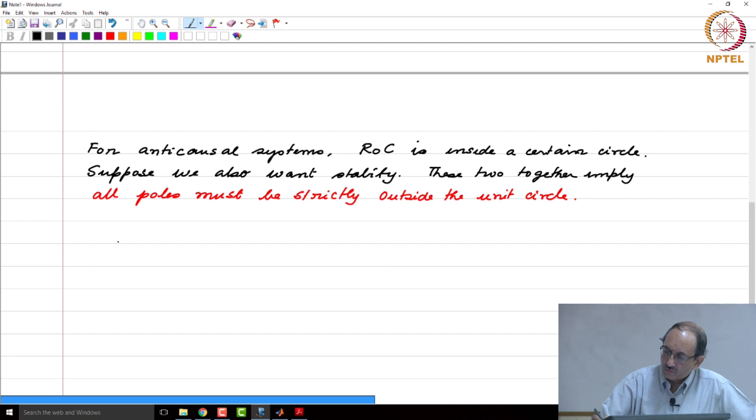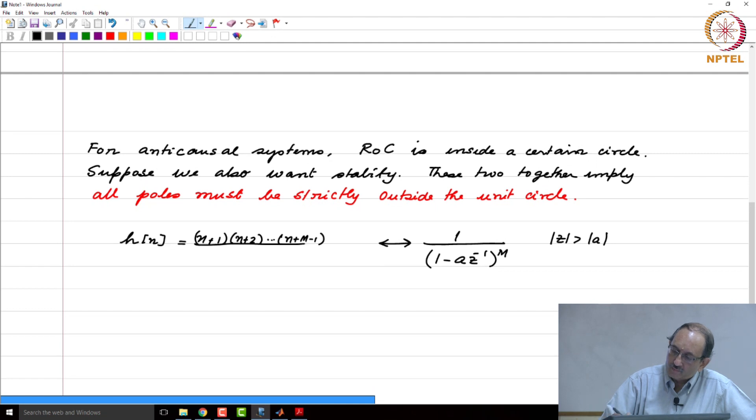In terms of discrete time systems, suppose you had 1 minus a z inverse to the m mod z greater than mod a. Then if you recall, this is nothing but n plus 1 times n plus 2 up to n plus m minus 1 by m minus 1 factorial times a to the n u of n. This is what the impulse response is for an m-th order pole.